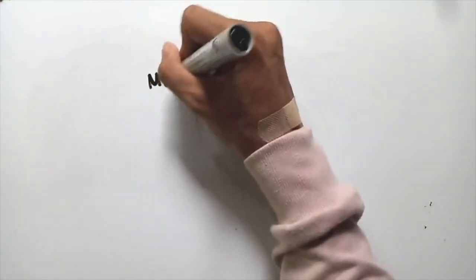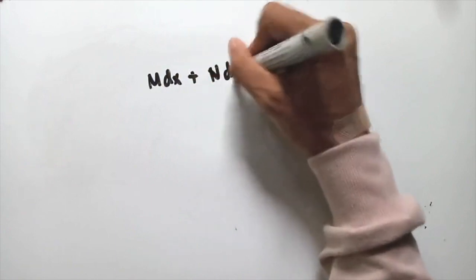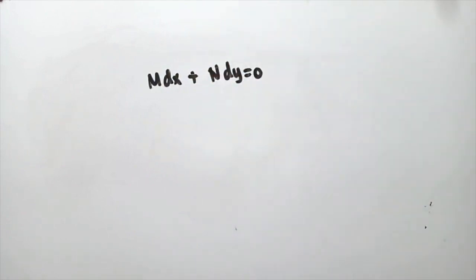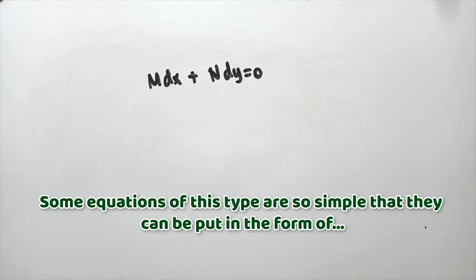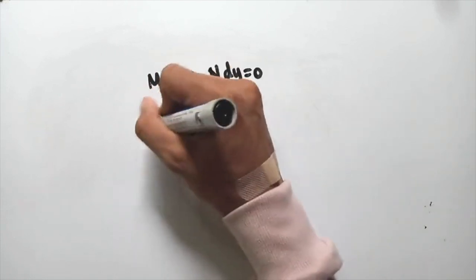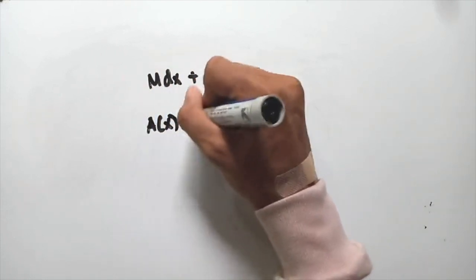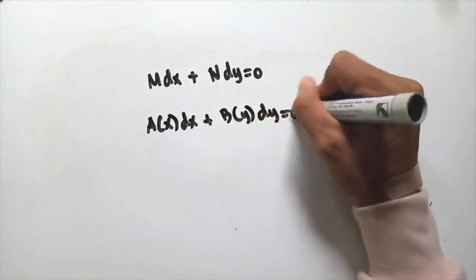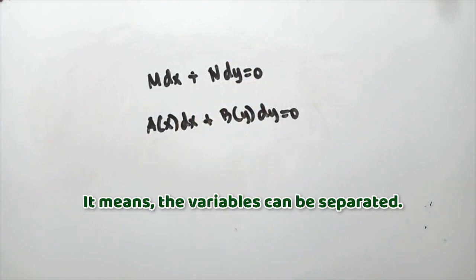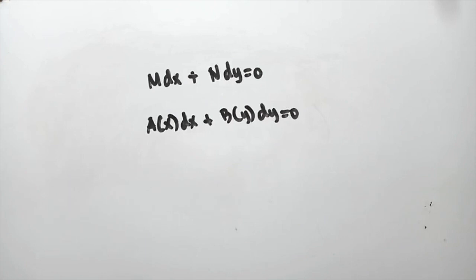Consider the equation of the form M dx plus N dy equal to 0, where M and N may be functions of x and y. Some equations of this type are so simple that they can be put in the form of f(x) dx plus g(y) dy equal to 0 — meaning the variables can be separated. Let's try some examples.